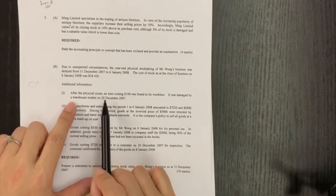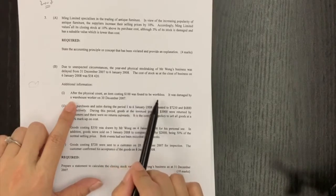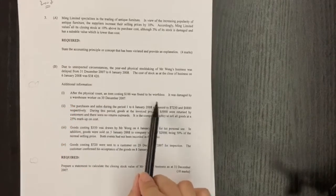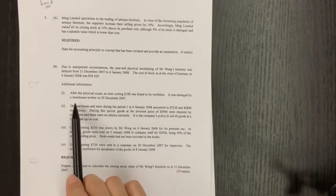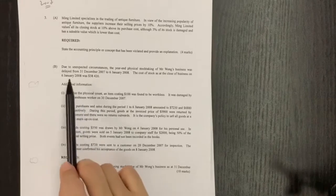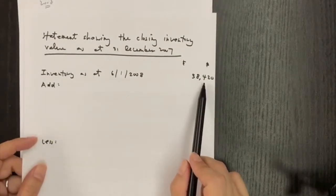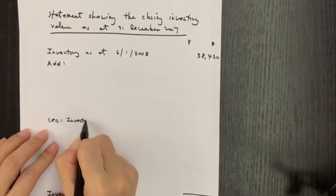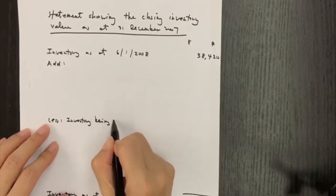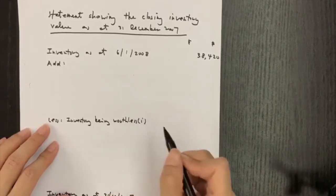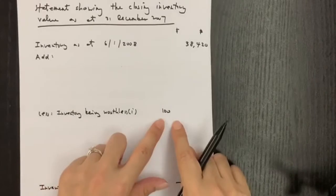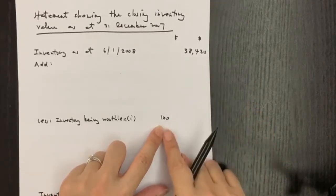Now we look at point number one: after the physical count, an item of 100 was found to be worthless — very bad news for our business, so we have to minus 100 from the value of inventory. It became worthless because it was damaged in the warehouse. The date for the physical stock count was 1st January, so within the figure 38,420 we have inventory being damaged. So we minus this 100 — inventory being worthless. This is related to point one.